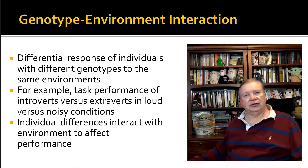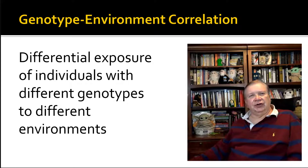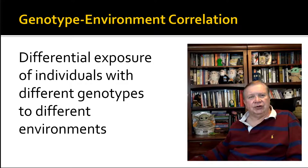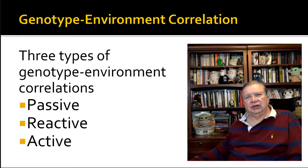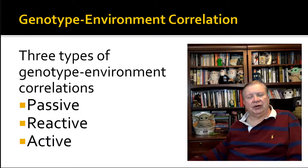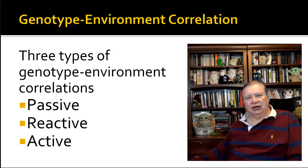Let's look at how this works. One of the things we're going to examine is the exposure that different individuals have to different kinds of environments. The developmental psychologist Sandra Scarr set up this idea that there are primarily three ways that the genotype and environment interact: passive reactions, reactive reactions, and active reactions.